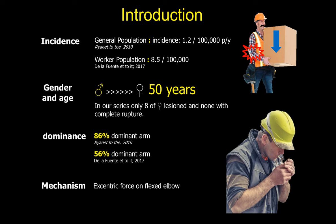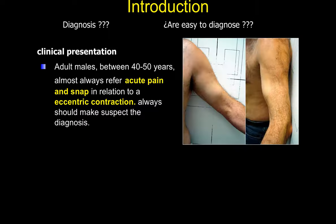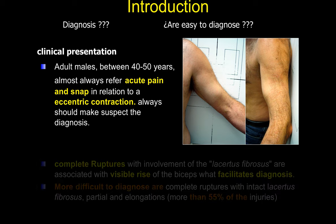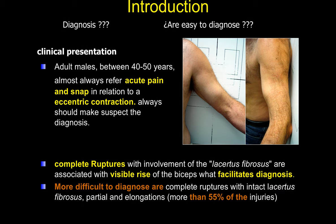The patient notices almost always a clear snap and an immediate pain. We can use several clinical tests that help with diagnosis. However, the clinical diagnosis of a rupture is really difficult when most of the tendon remains inserted or if the lacertus fibrosus is not broken. This happens in more than 55% of injuries.